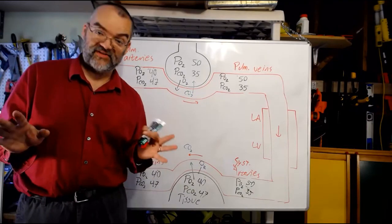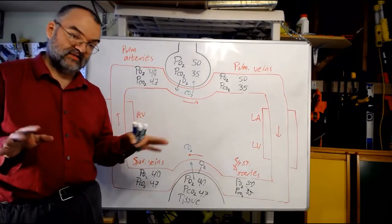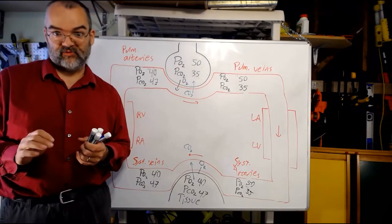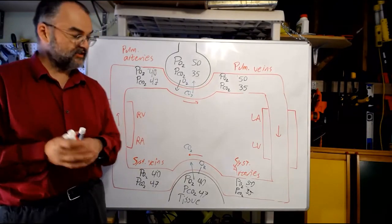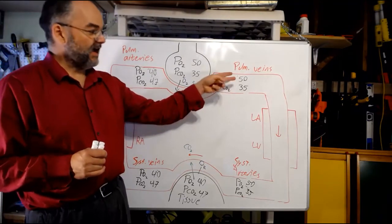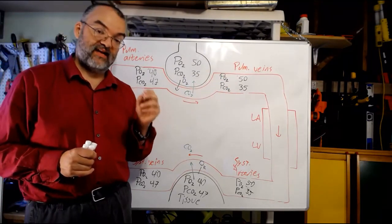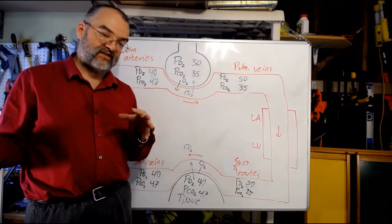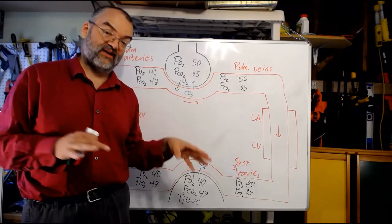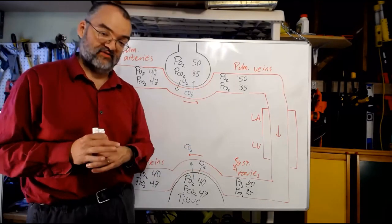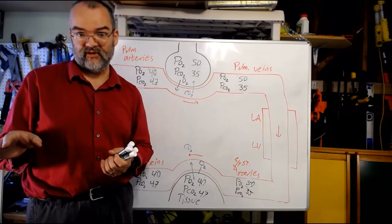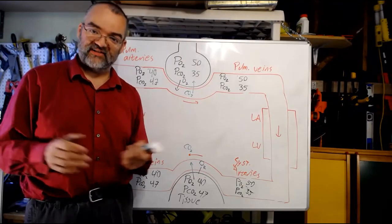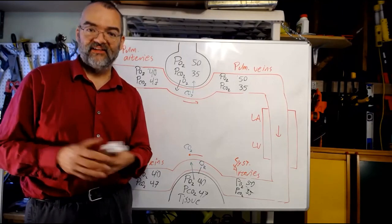That's a summary of how gas exchange works and how it differs in different conditions. In lecture four for the respiratory system, we're going to spend a lot of time talking about how oxygen and CO2 are carried in the blood, how hemoglobin works, how we determine the saturation of hemoglobin based on plasma pO2 — the hemoglobin oxygen dissociation curve — and a few other things about the respiratory system to tidy it all up. I'll see you then.